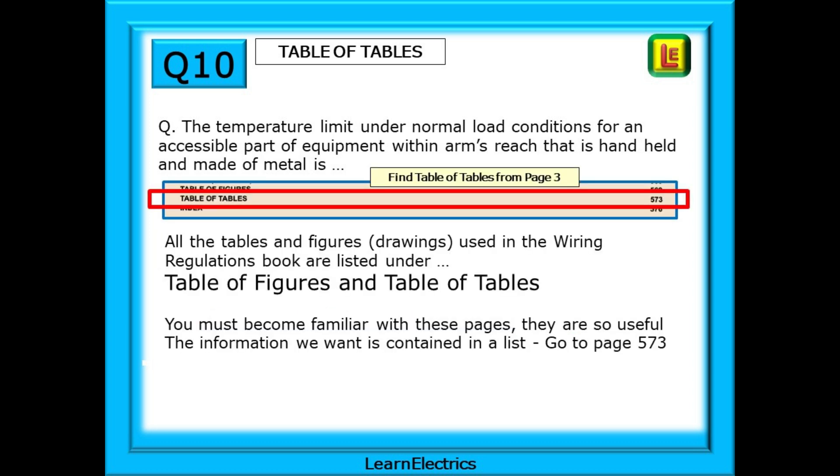You need to understand that all the tables and all the figures or drawings that are used in the wiring regulations book are listed under Table of Tables and Table of Tables towards the back of the book. You must become familiar with these pages. They are so very useful and will reduce your search times.